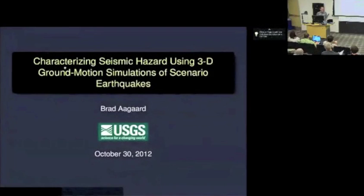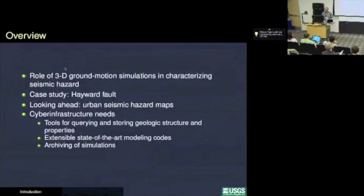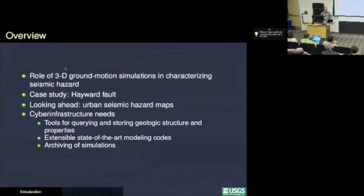This is going to be a much more applied topic than most of the earlier talks, but it also requires a fair amount of cyber infrastructure. We're going to be focusing on the forward problem because we want to look at characterizing the seismic hazard. I'll briefly describe the role of 3D ground motion simulations in characterizing seismic hazard, discuss one case study related to the Hayward Fault, look ahead about where probabilistic seismic hazard is going and the larger role of computational infrastructure, and then finish up by looking at some of the needs.